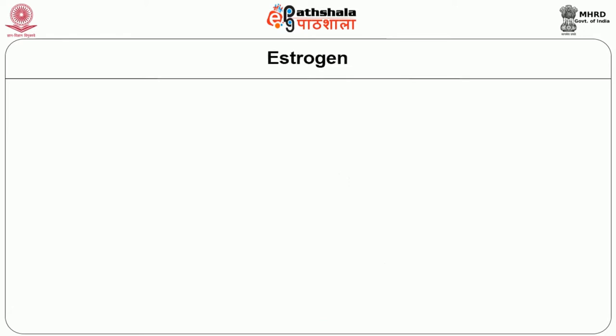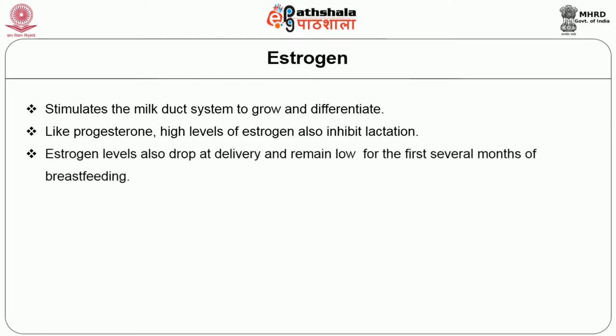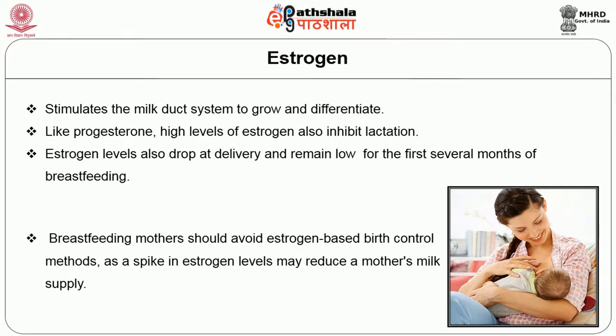The second hormone is estrogen. Estrogen stimulates the milk duct system to grow and differentiate. Like progesterone, high levels of estrogen also inhibit lactation. Estrogen levels drop at delivery and remain low for the first several months of breastfeeding. Breastfeeding mothers should avoid estrogen-based birth control methods, as a spike in estrogen levels may reduce the mother's milk supply.